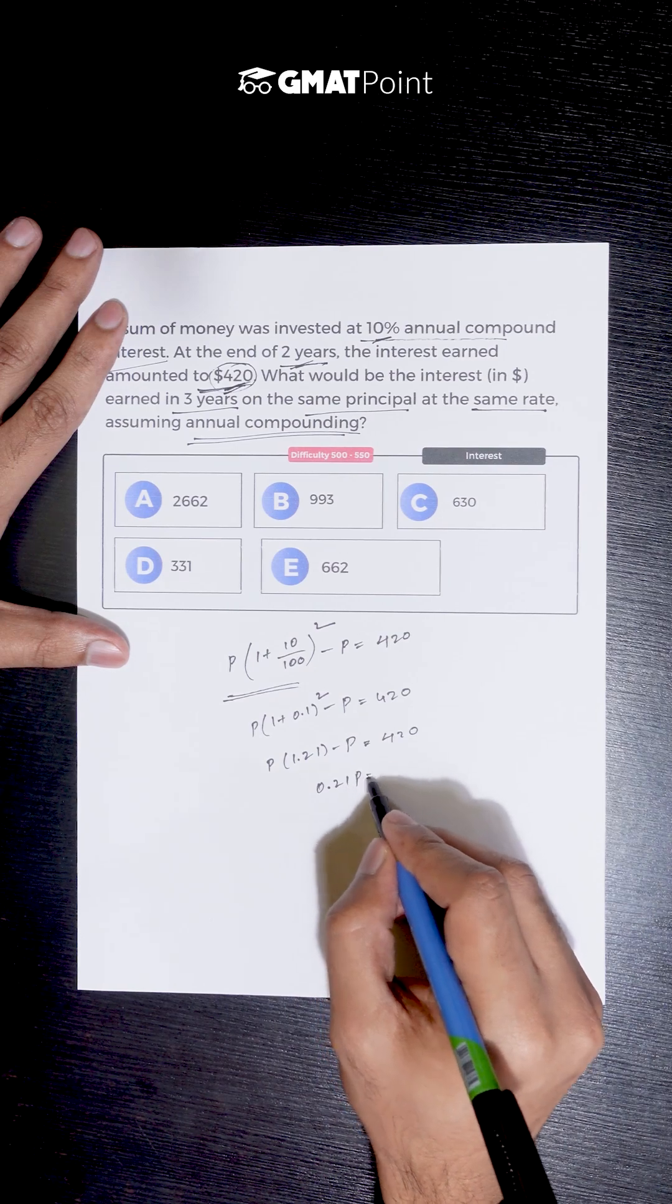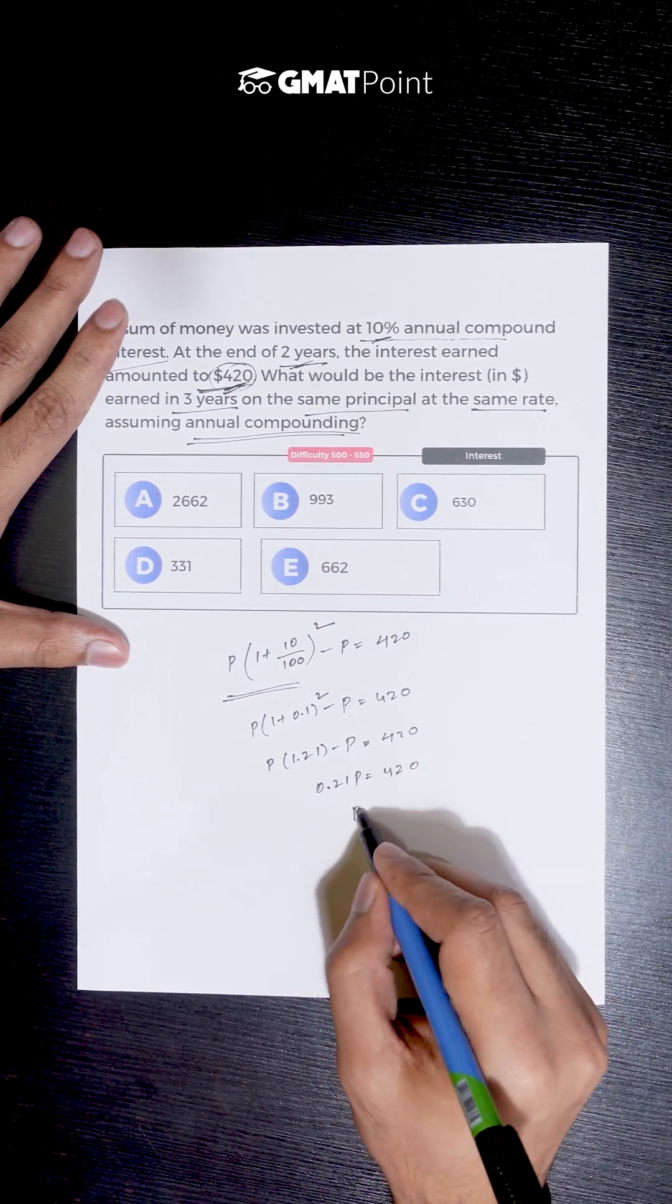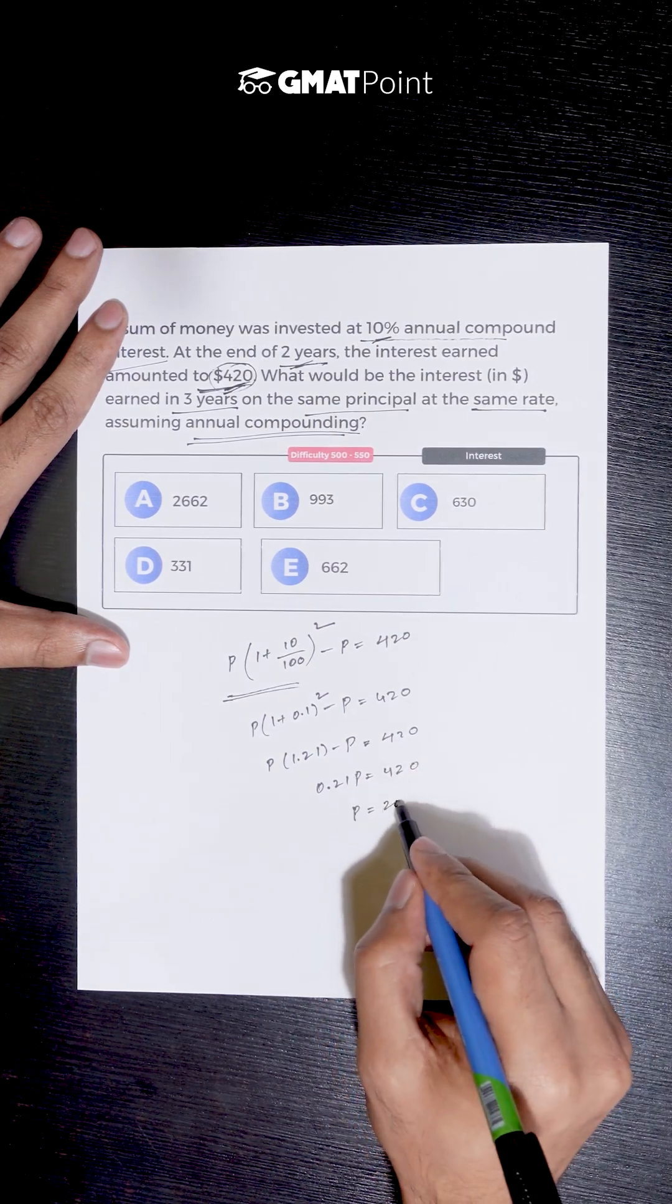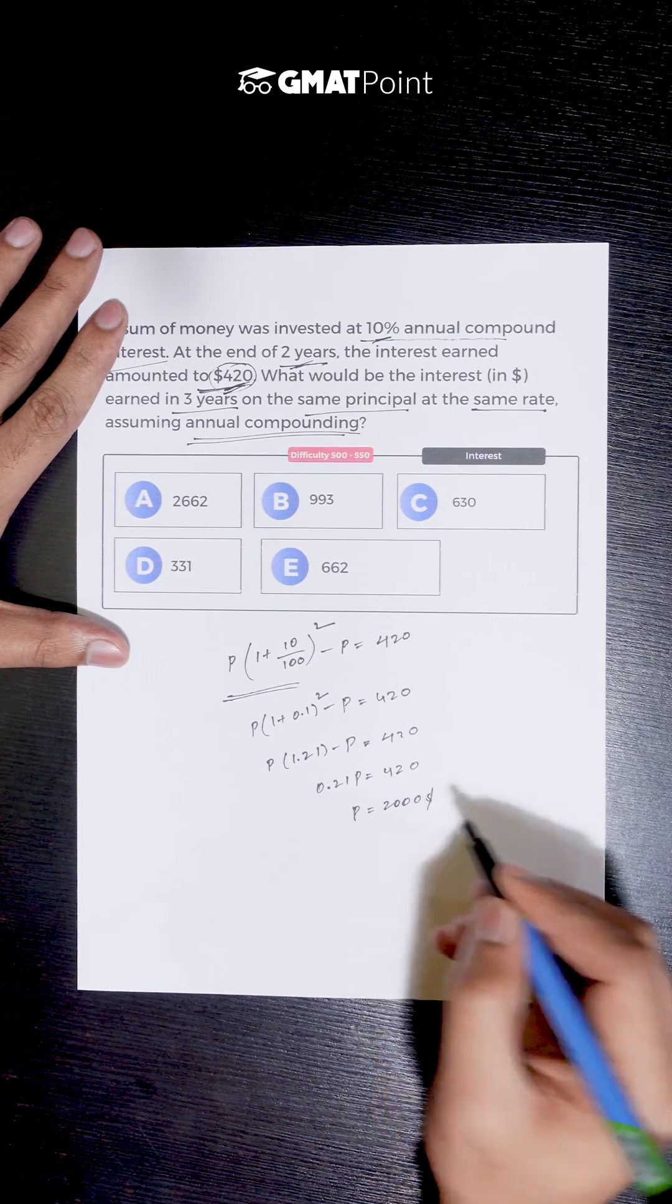0.21P is equal to 420, and we get the value of P to be $2000.